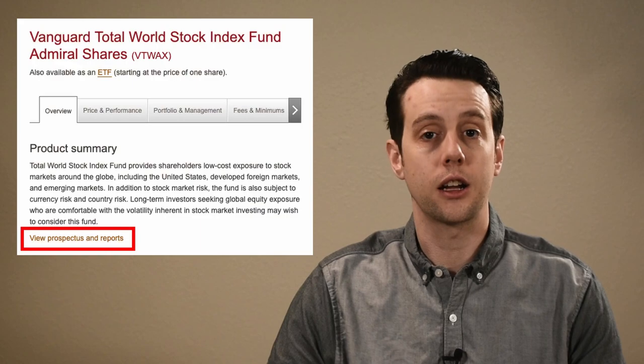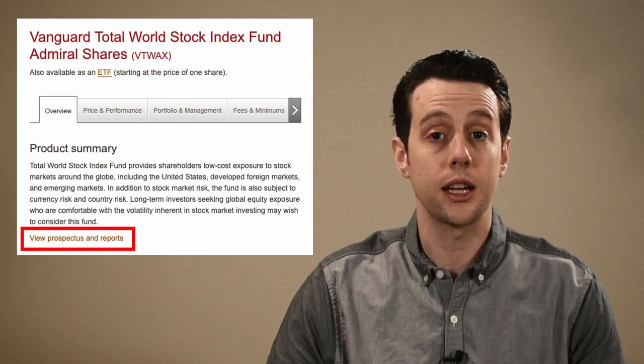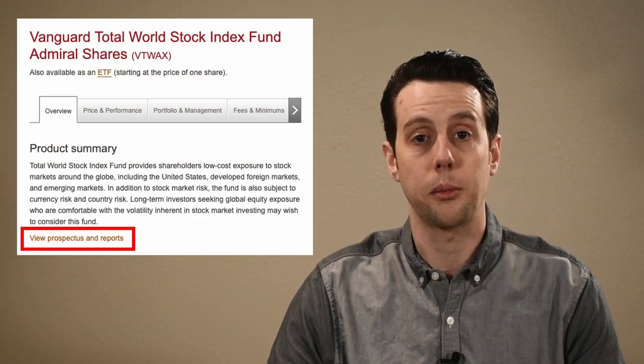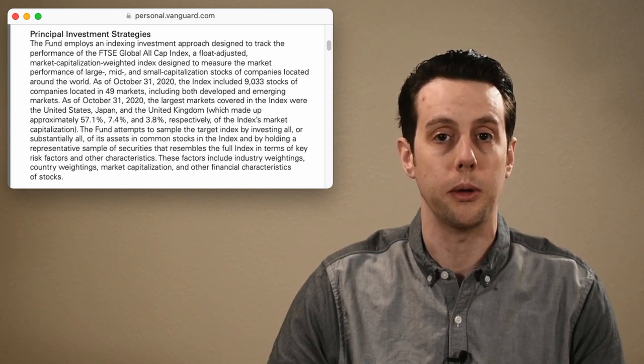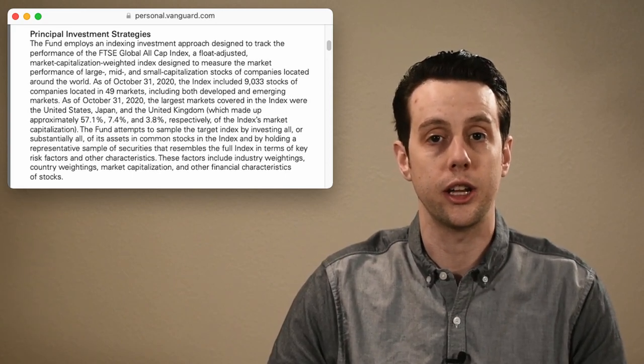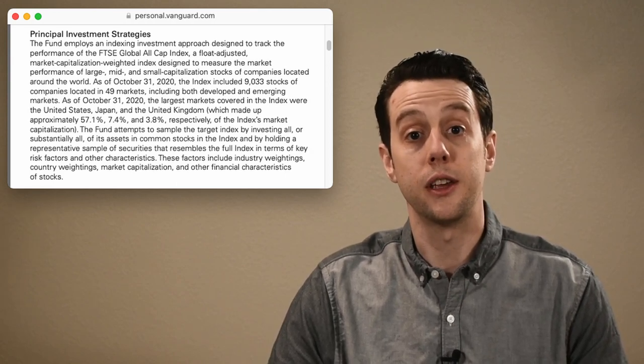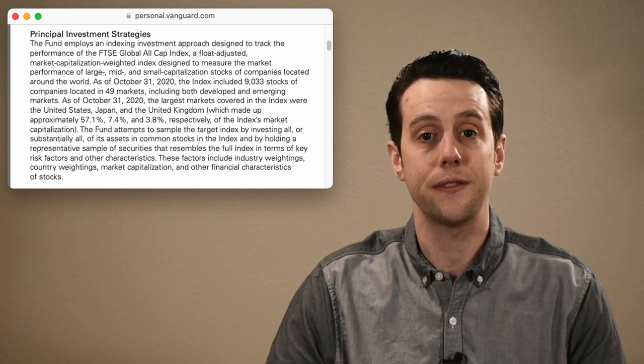Let's start by talking about the fund's strategy. Whenever you consider buying a fund, you should read the fund's prospectus. The prospectus is a document which explains the investment strategy, risks, and other details of the fund. For Vanguard funds, you can find a link to the prospectus under the product summary on the fund's page. For strategy, the Vanguard Total World Stock Index attempts to track the performance of the FTSE Global All-Cap Index. This index is maintained by FTSE Group,